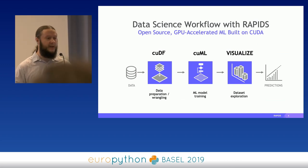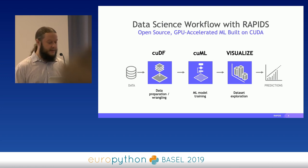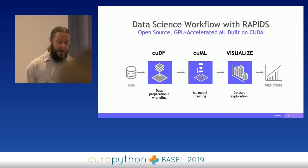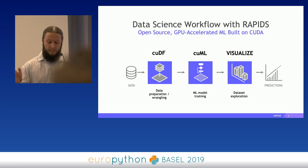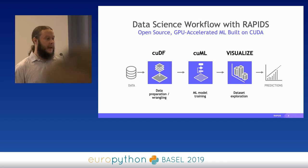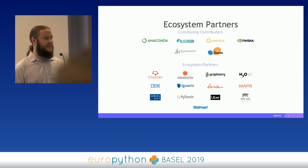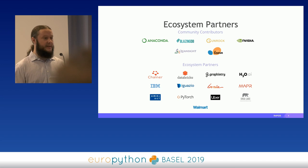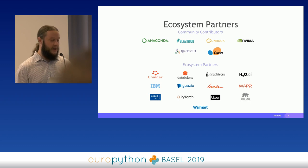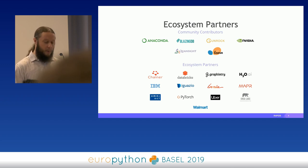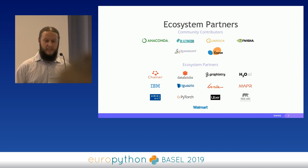Here is a fancier visualization of that pipeline: we start with data, do data preparation, machine learning model training, data exploration, get predictions, and then deploy. Rapids is not just an NVIDIA effort — it's a whole community effort. Important contributors include the scikit-learn people, the URIA people, Anaconda, QuantSight, and ecosystem partners such as Walmart, who have been very helpful in both development and providing use cases.